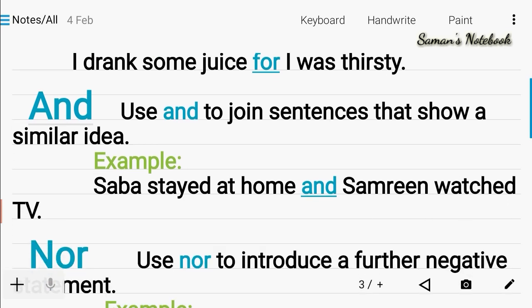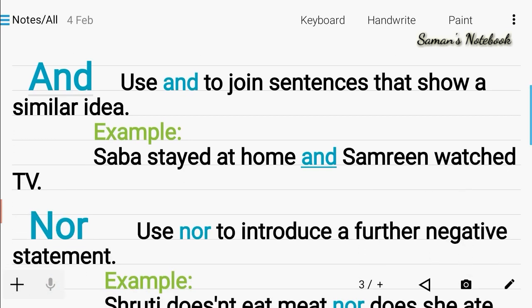...was thirsty. Number two: And. Use 'and' to join sentences that show a similar idea. Example: Saba stayed at home...